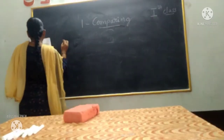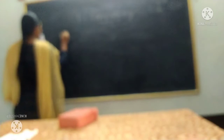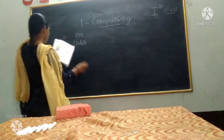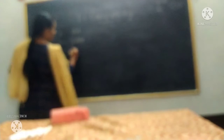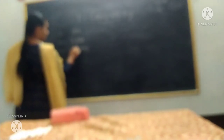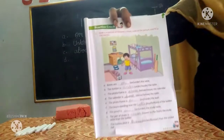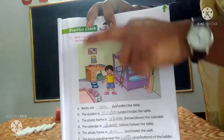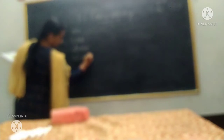Look at your books and answer. Write the answers: A — on; B — dustbin is under the table; C — photo frame is above the calendar; D — calendar is above the table.